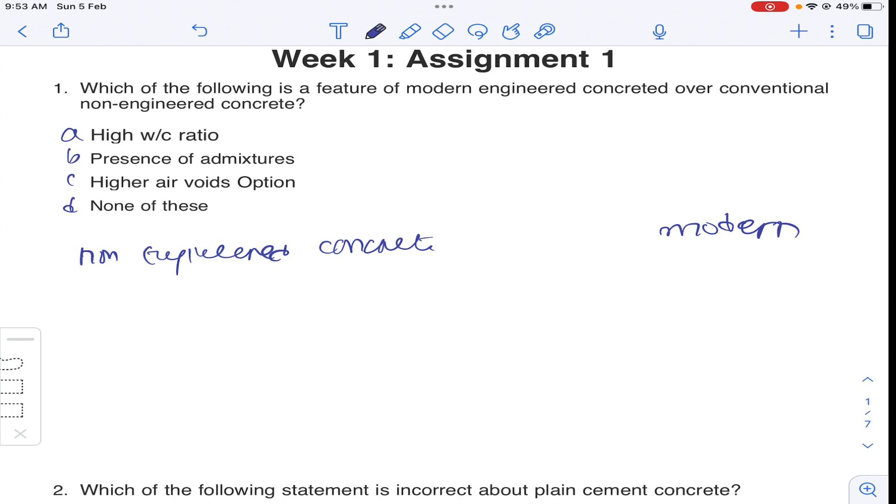So non-engineered concrete consists of coarse aggregate, fine aggregate, cement and water. So along with this, the modern engineered concrete will also consist of admixtures.